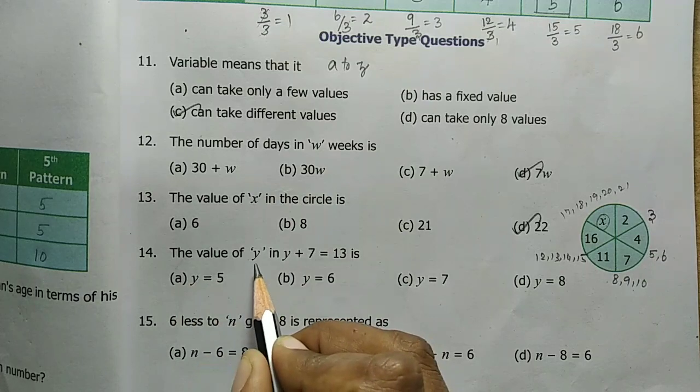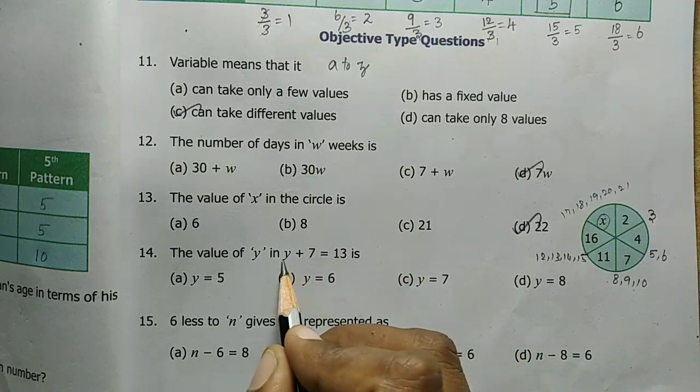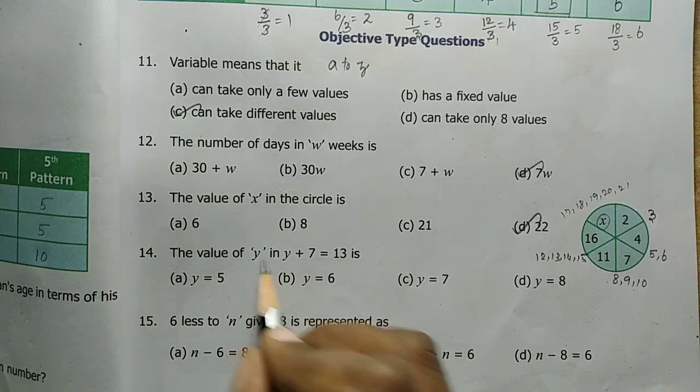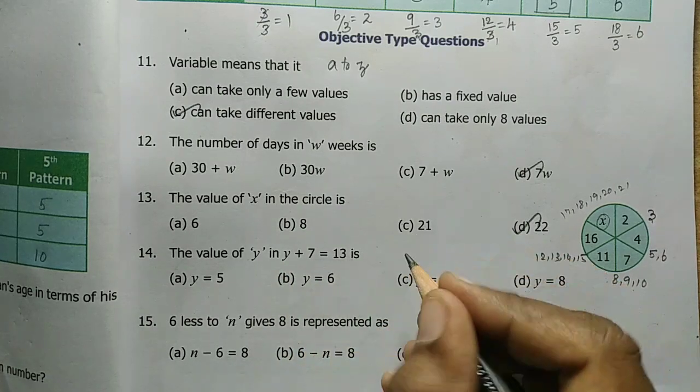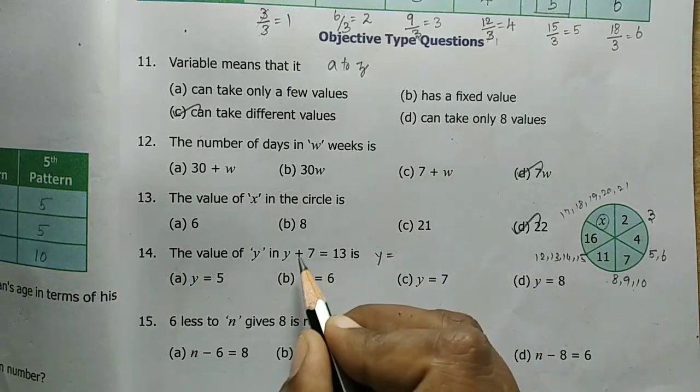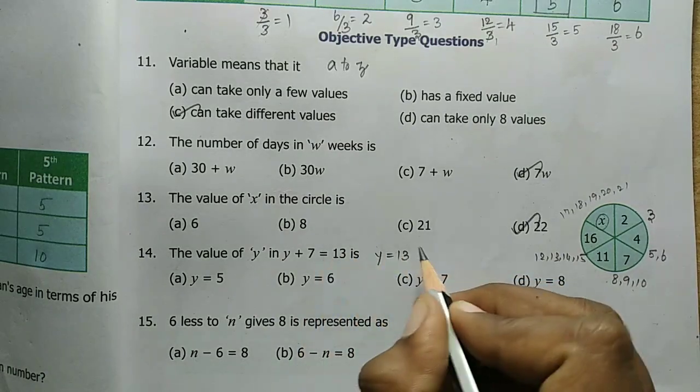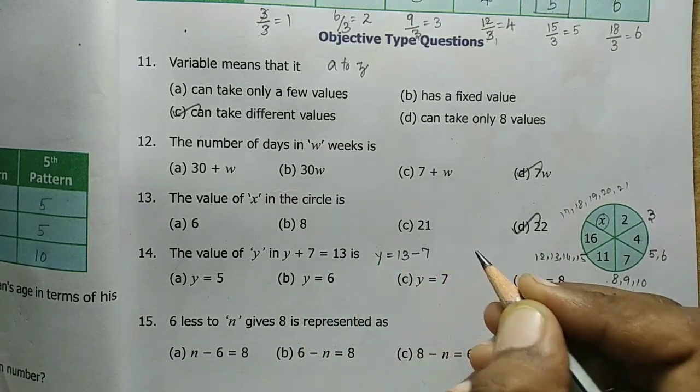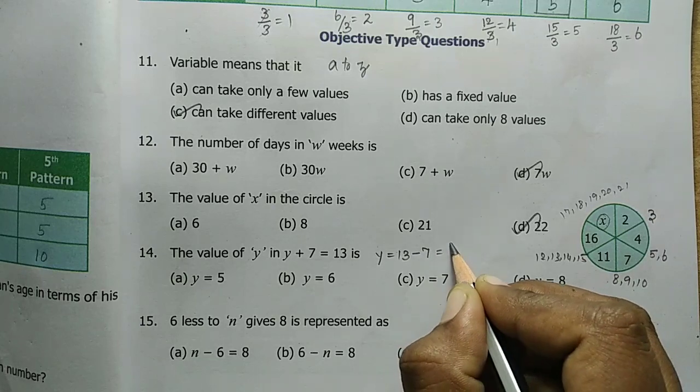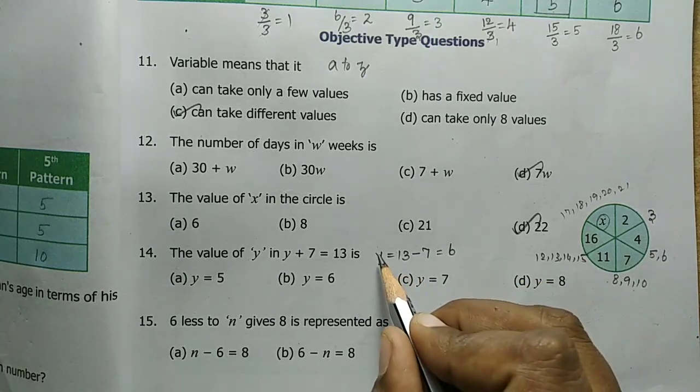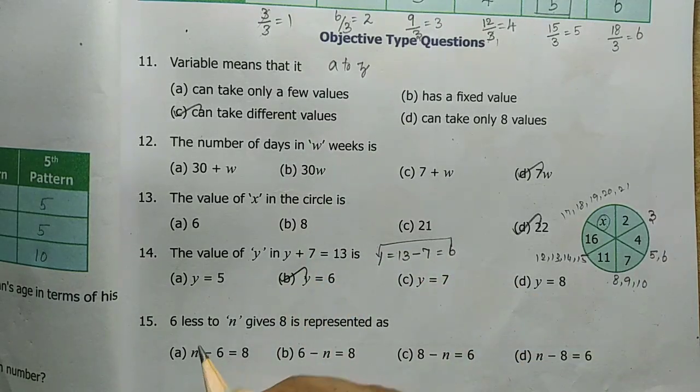Fourth one, the value of Y in Y plus 7 that is equal to 13 is dash. Y plus 7 equal to, plus 7 move to inner side, becomes minus 7. So 13 minus 7, answer is 6. So Y is equal to 6, option B.